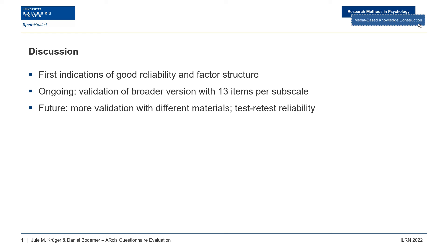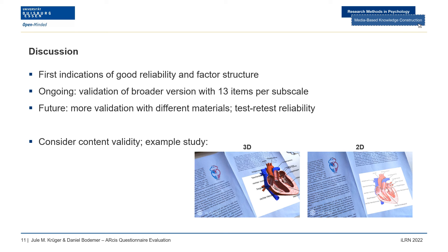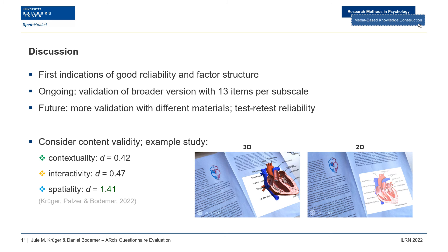In further analyses, it is important to also consider the questionnaire's content validity — does the questionnaire measure what it intends to measure? We saw first indications of this in a study comparing 3D and 2D materials, revealing, as expected, a very large effect concerning perceived spatiality, but also medium effects for contextuality and interactivity. This indicates a difficulty to distinguish the three characteristics, which may be due to item wording and self-rating, but also due to a general close connection of the characteristics in common AR implementations.